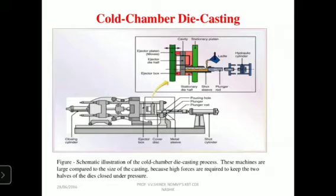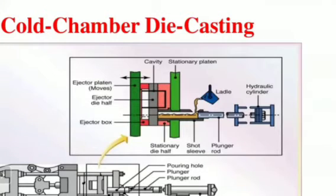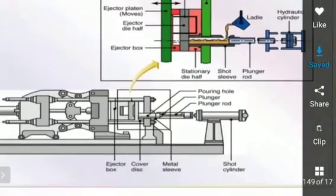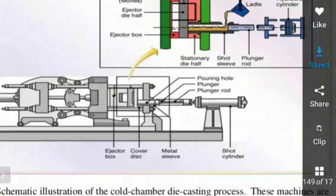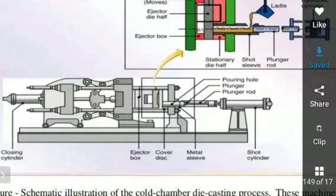Now we are going for cold chamber die casting. Here you can observe the diagram. The main parts include: stationary platen, stationary die half, short sleeve, plunger rod, hydraulic cylinder, ejector platen, ejector die half, and ejector box. These are all shown in the line diagram.